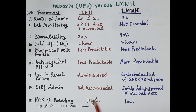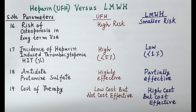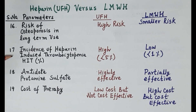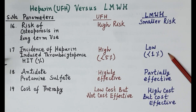Regarding risk of bleeding: since unfractionated heparin inhibits both factor 10a and thrombin (2a), it is more potent, resulting in a higher risk of bleeding compared to low molecular weight heparin. The risk of osteoporosis with long-term use is higher with unfractionated heparin, whereas it is lower with low molecular weight heparin. The incidence of heparin-induced thrombocytopenia (HIT) is also higher with heparin, compared to less than 1% with low molecular weight heparin.